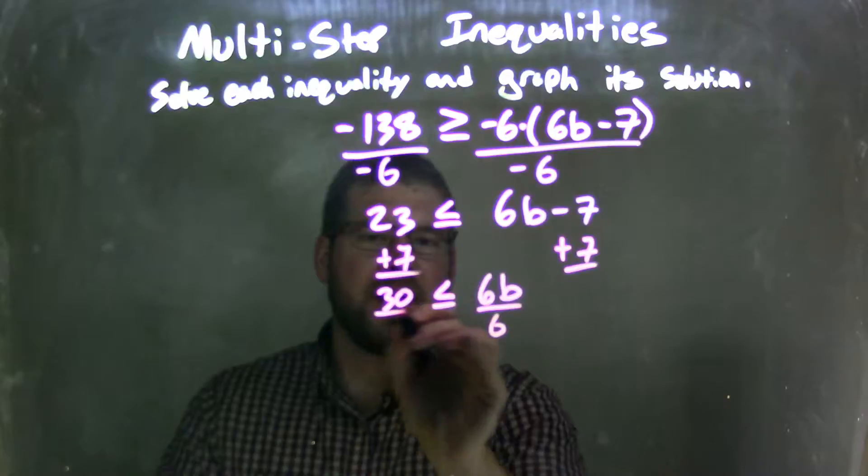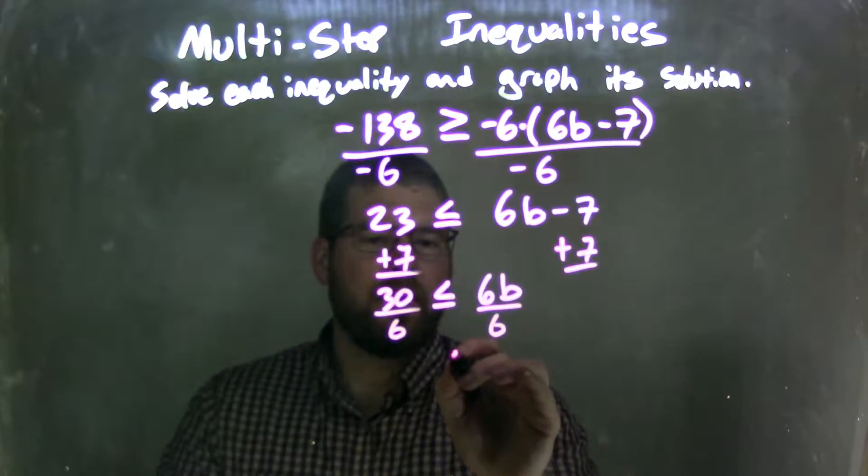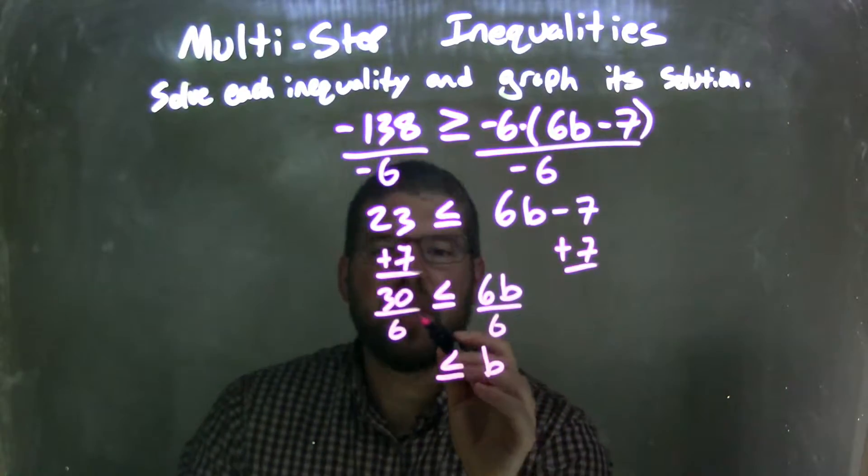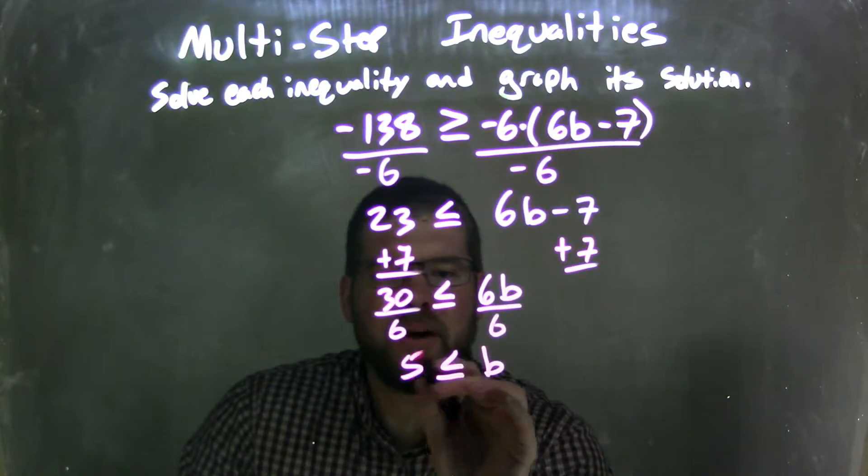divide by 6 to both sides. That leaves me with b by itself here on the right, and 30 divided by 6 being 5 on the left.